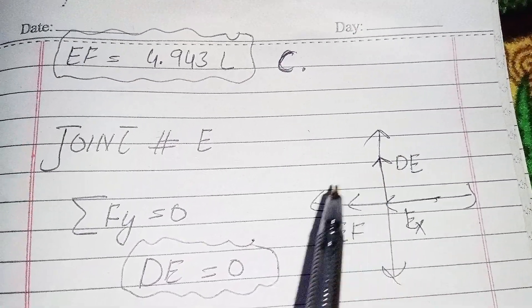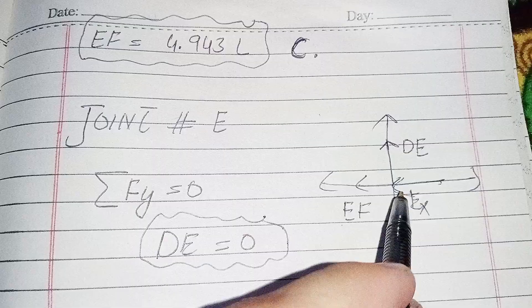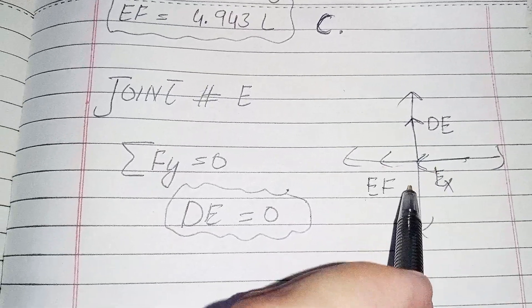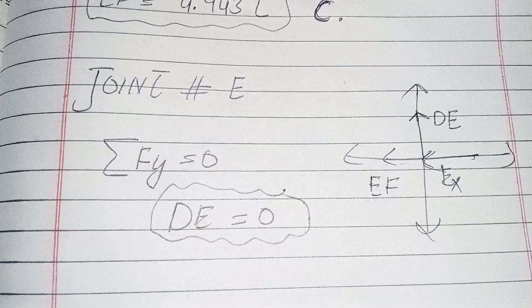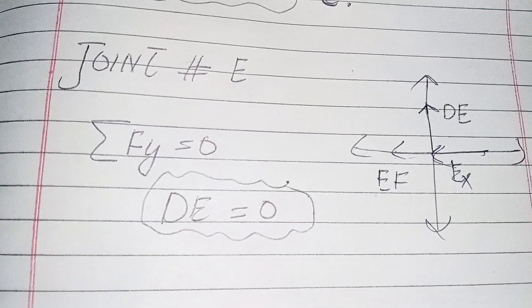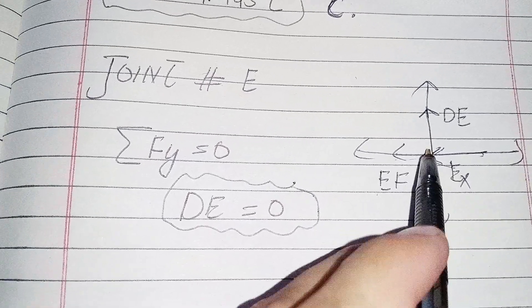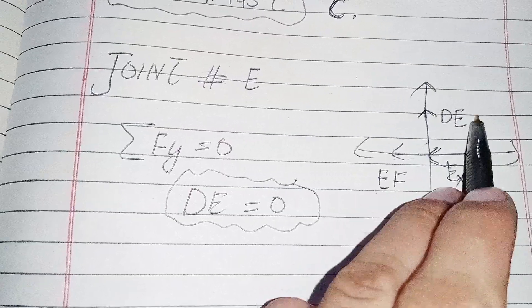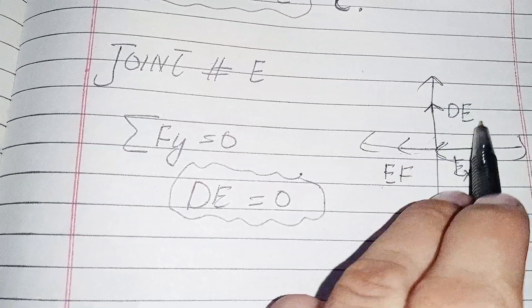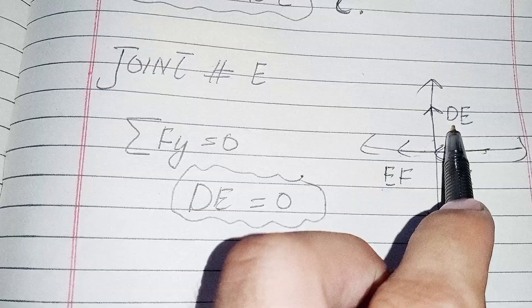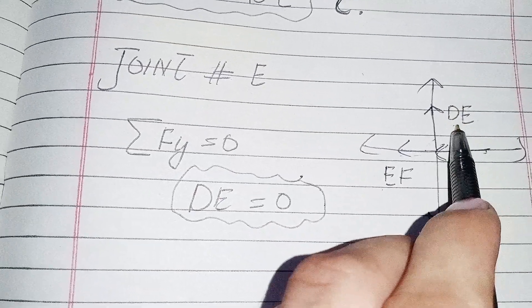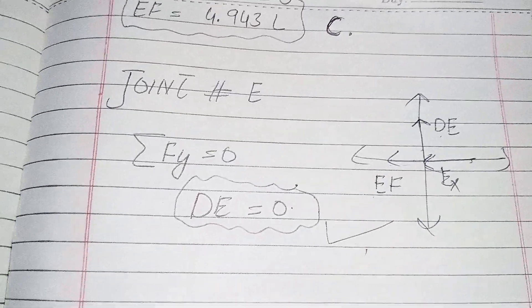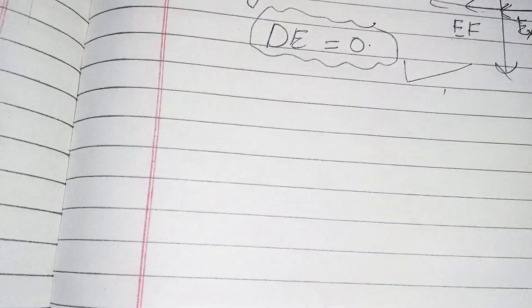Finally, I take joint E to find force DE. Using the shortcut explained earlier: when two forces are in the same line of action and a third force makes a 90-degree angle with them, the third force equals zero. So DE equals zero. Thank you very much.